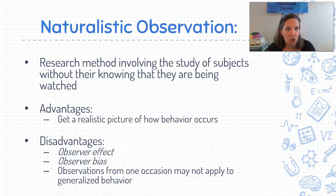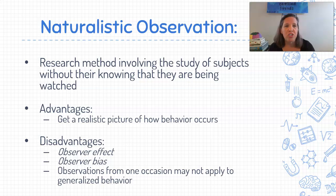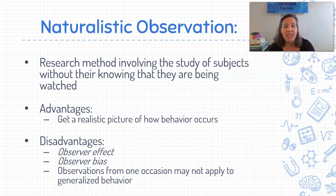Naturalistic — nature. So this is when we are observing behavior as it naturally occurs. If we're observing animals, we're observing them in their natural environment. We don't want to disturb that environment, and we don't even want them to know that we're watching them — and that applies to humans or animals. The biggest advantage to naturalistic observation is that it's real; you get a very realistic picture of how someone behaves in their natural environment.